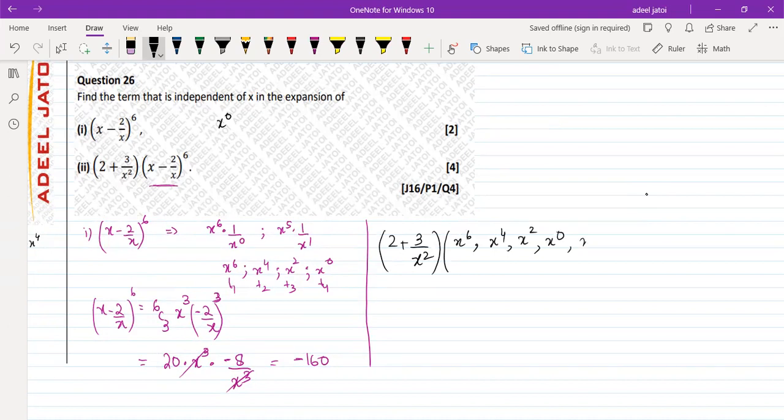And we can always write x to the power or 1 upon x square as well. We can write down 1 upon x to the power 4. Now why did I write this? Because since we need to have coefficient of independent to x, x value of independent to x. So if we multiply this 2, we should be multiplying this with x to the power 0, which is already term 4 and term 4 answer is minus 160.